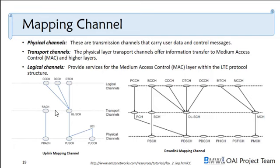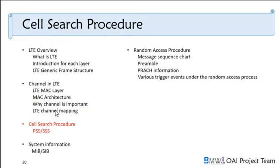The traffic channel transmits data and voice, and the control channel handles signaling. For the transport channel, it sits between the physical layer and the MAC layer. The physical layer transport channel transfers information to the Medium Access Control and higher layers.